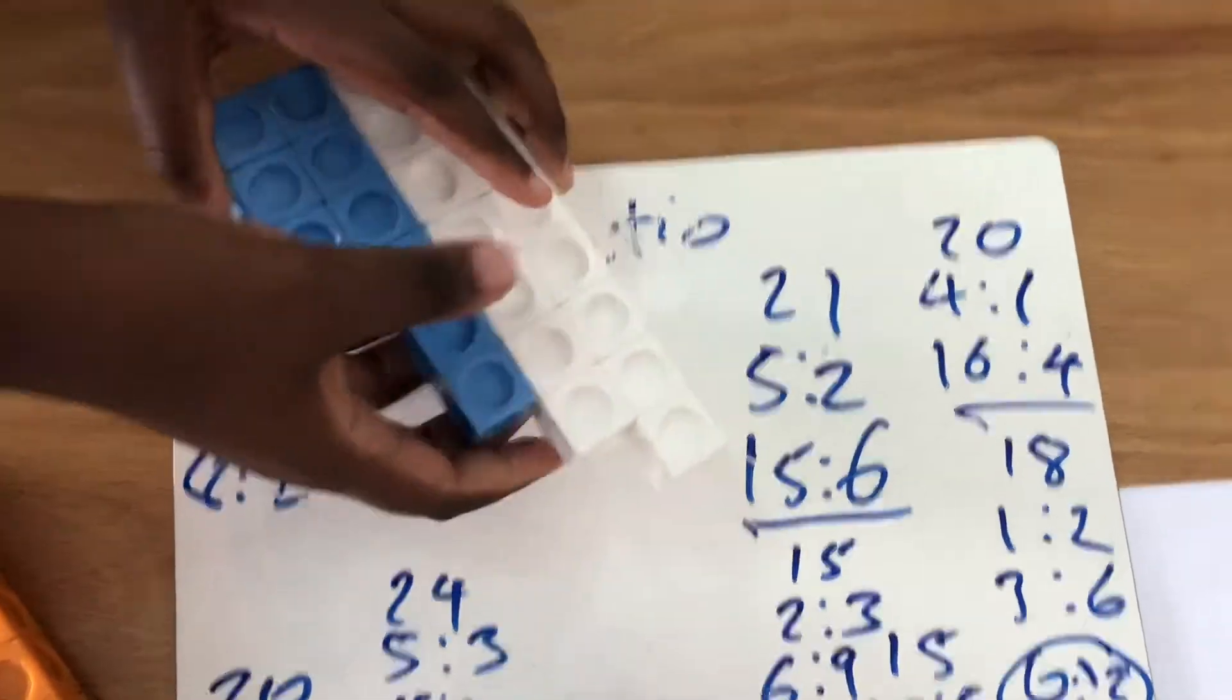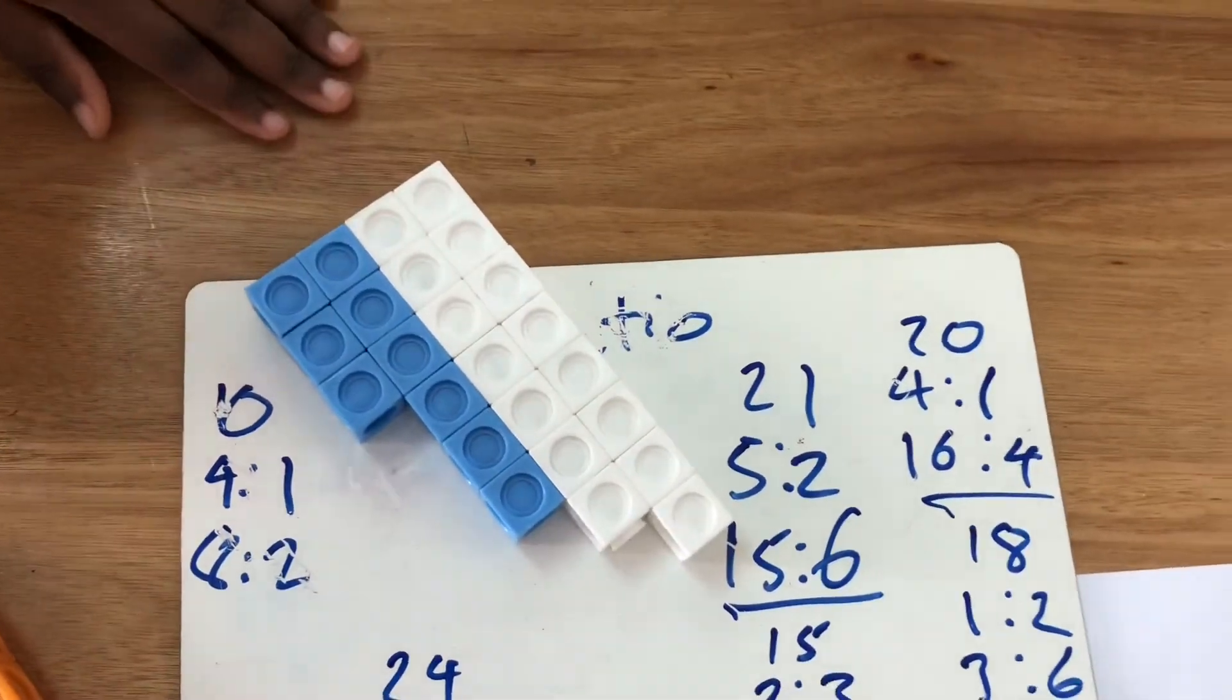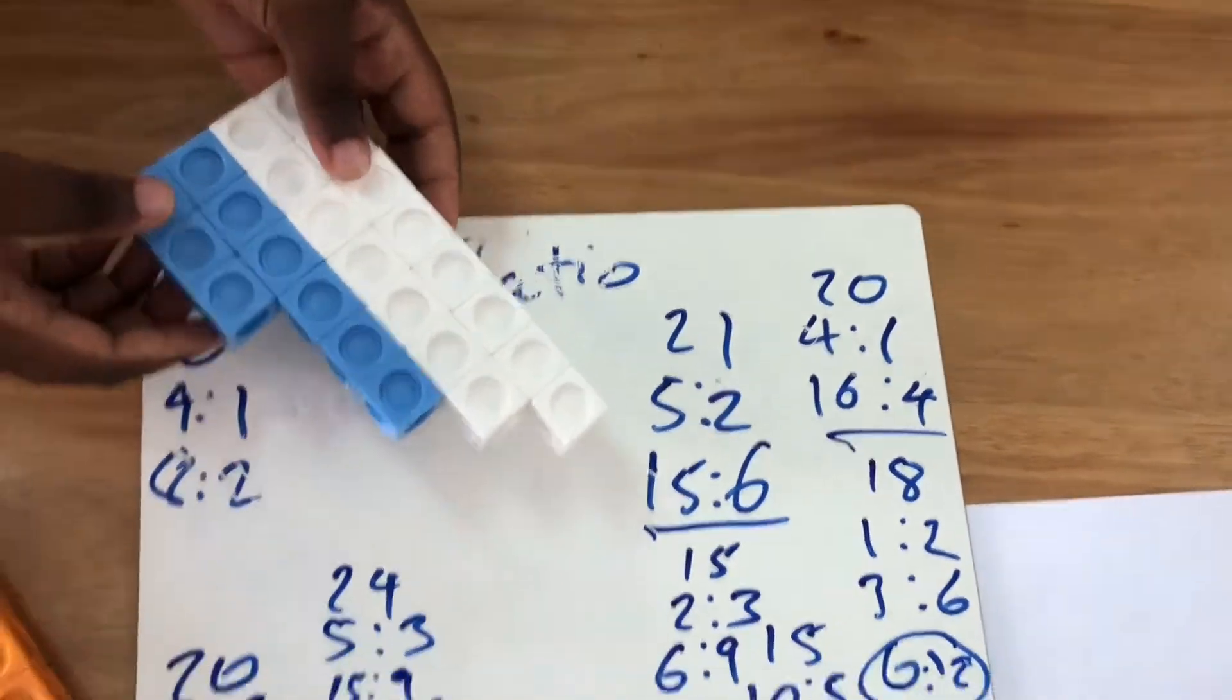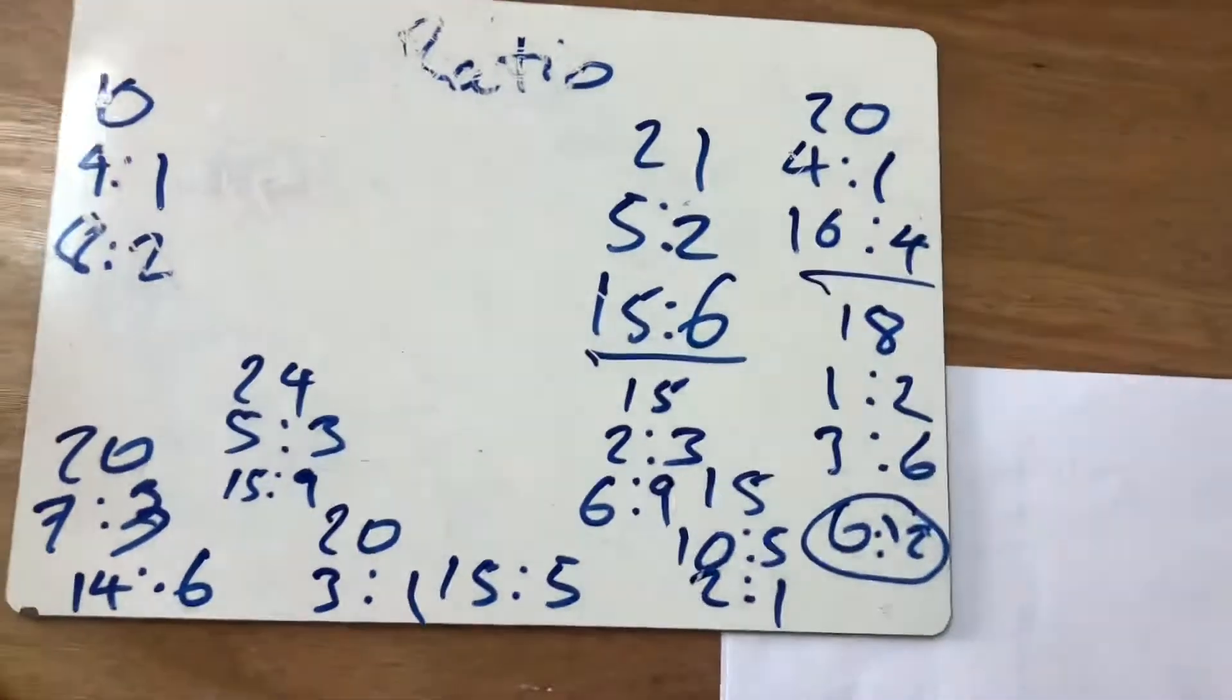So you have 15 white and 9 blue represented there. And as you say, simplified in a given ratio of 5 to 3. Fantastic.